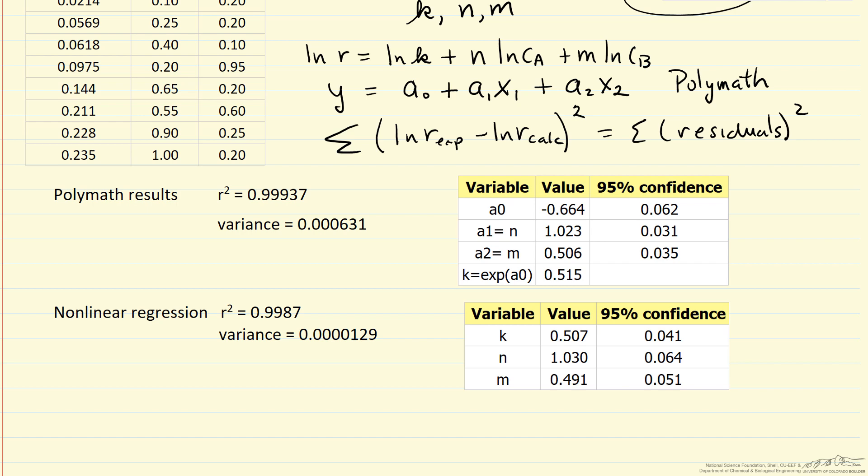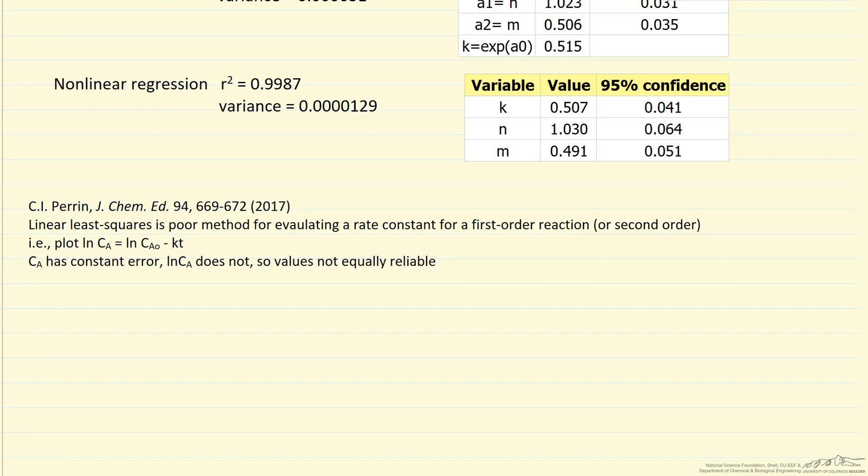However, generally you have to be careful with linear regression. So here I'll give you a reference for more details, but this reference in Journal of Chemical Education points out that linear least squares like we've done here may not be a good method for evaluating rate constant for first order reaction or second order. This is looking at plotting concentration versus time on a log scale for first order expecting a straight line.